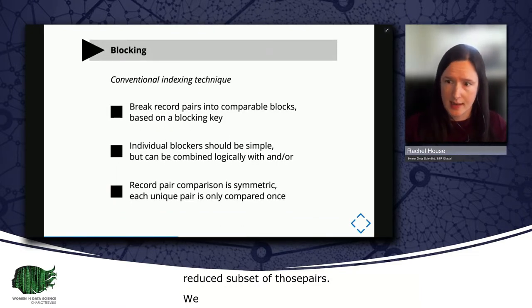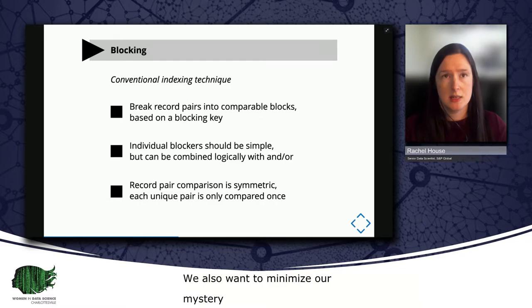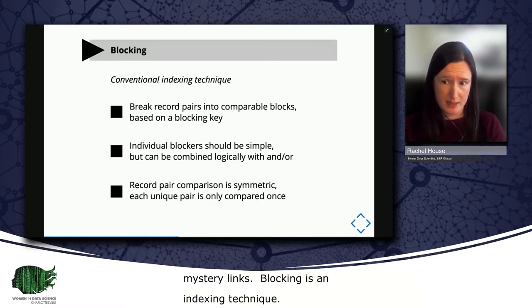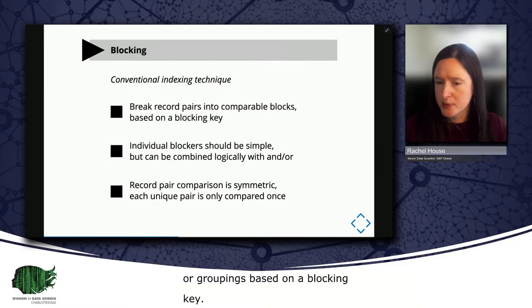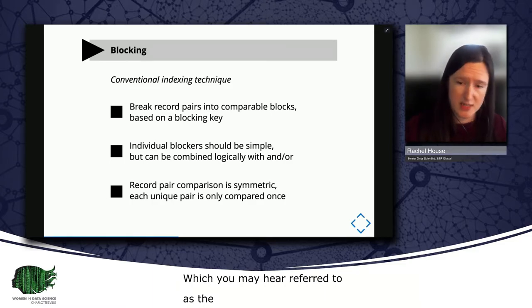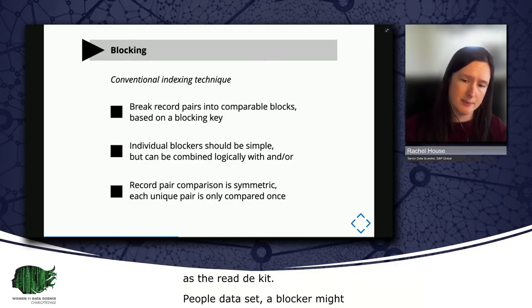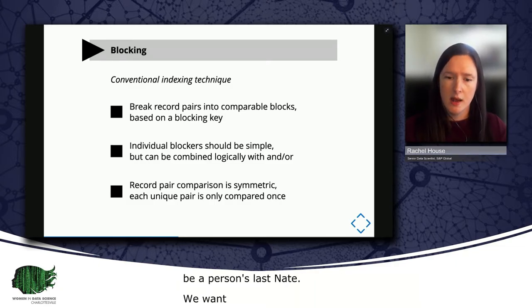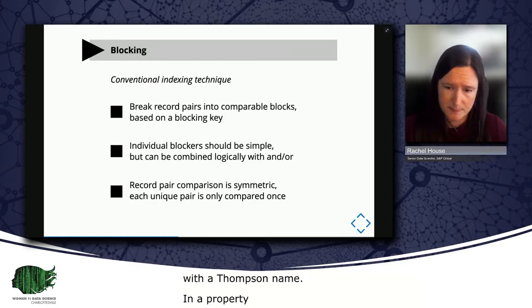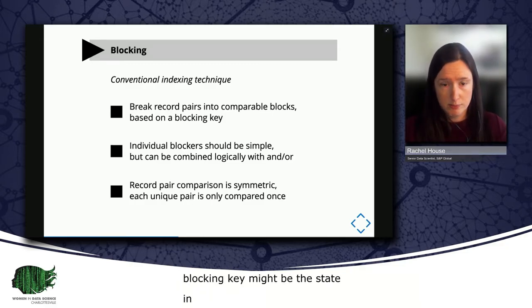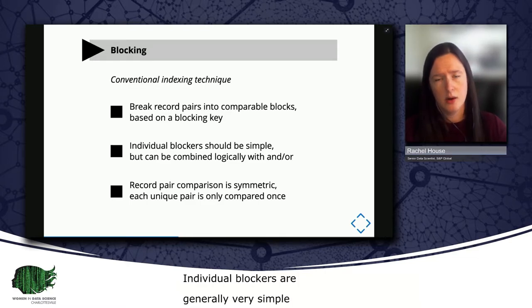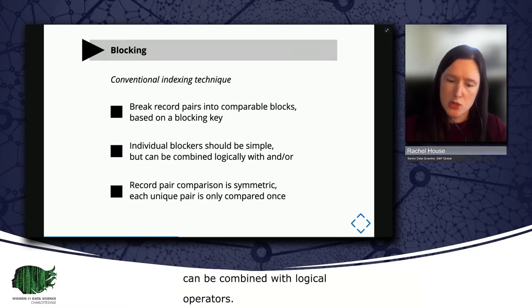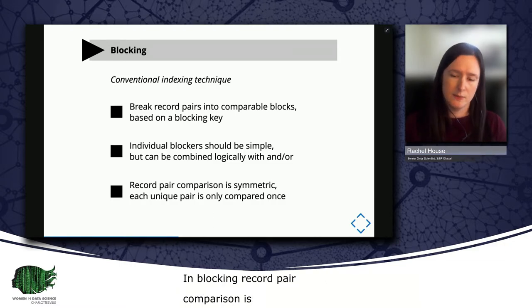Blocking is the conventional indexing technique, which is why you'll often hear indexing and blocking used interchangeably. And the basic idea behind blocking is that you break your record pairs into blocks or groupings based on some sort of blocking key, which you may also hear referred to as a predicate. So in a people dataset, a blocker might be a person's last name. For example, we want to group all the records with a Thompson surname together to compare. And in a property dataset, a blocking key might be the state in which a building resides. Individual blockers are generally very simple, but they can be combined into composite blockers with logical operators. In blocking, record pair comparison is symmetric. So each unique pair is compared only once, even if it's filtered by multiple blockers.